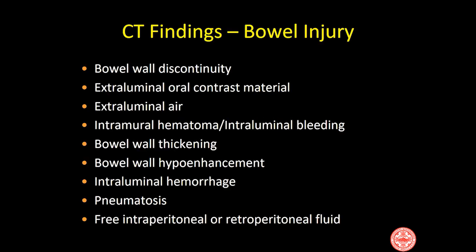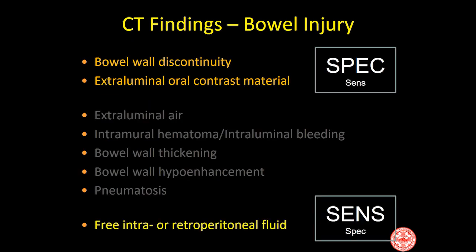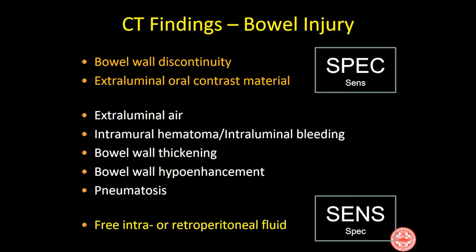On CT, these are all the findings described in the literature for bowel trauma. Some are very specific — finding either discontinuity in the wall or extraluminal oral contrast, if given, means the patient almost certainly has a bowel injury. The most sensitive sign is the presence of free intra- or retroperitoneal fluid, but it's also the least specific. Even though the vast majority of patients with bowel injuries will have free fluid, most patients with free fluid do not have a bowel injury. The other signs, when found in combination, are most useful for making this important but difficult diagnosis.